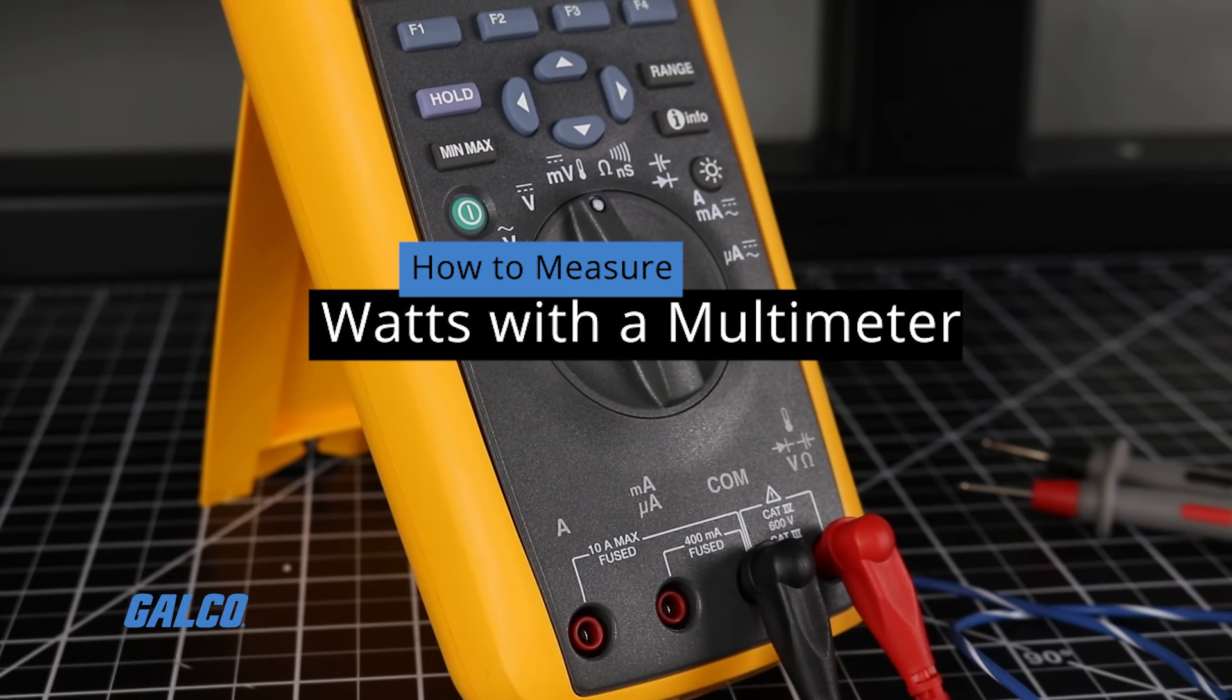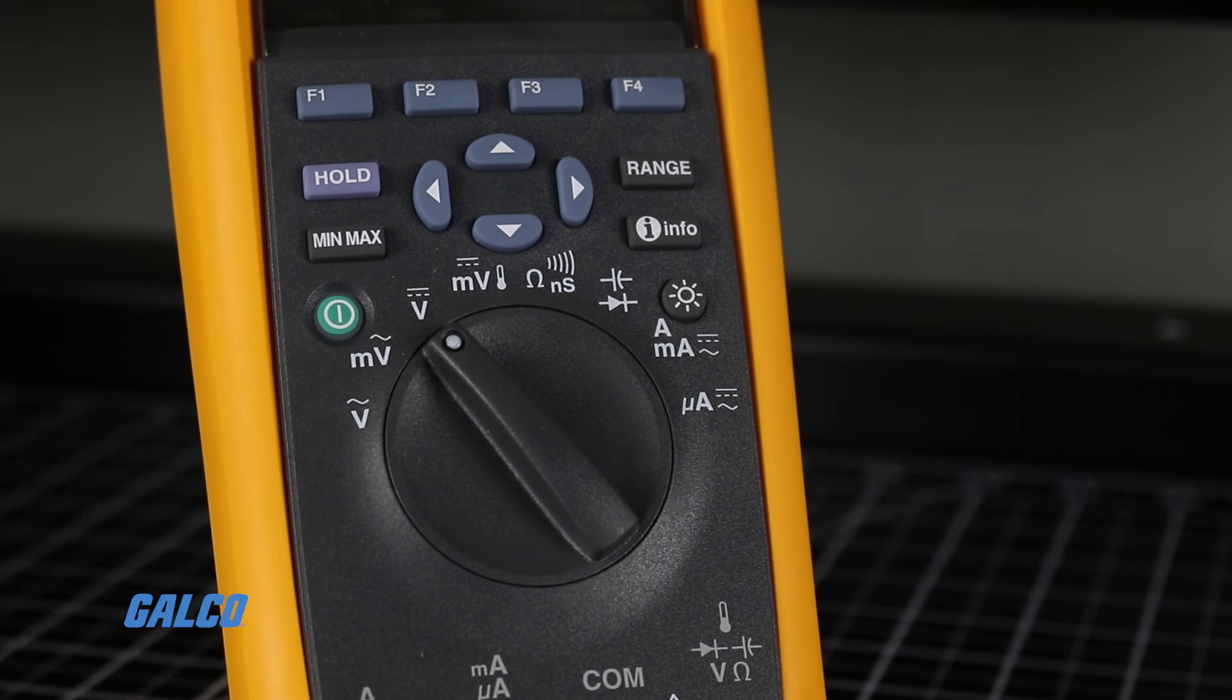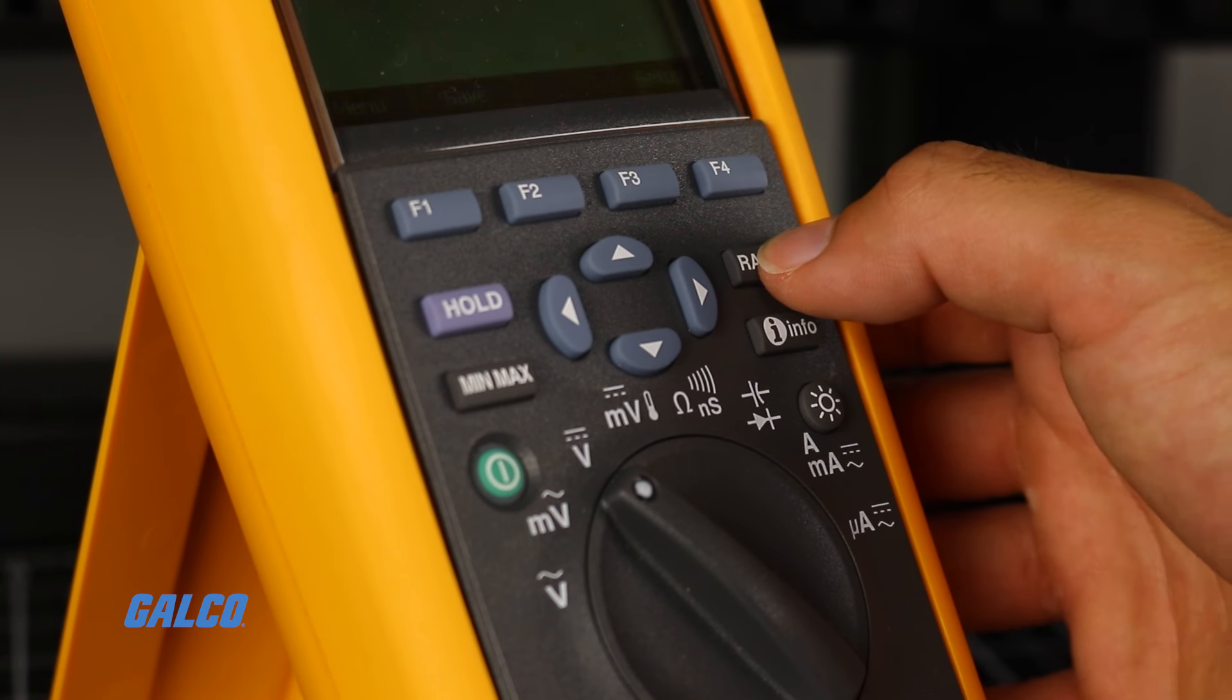To measure watts with a multimeter, begin by choosing the voltage setting on your multimeter dial. Make sure that the appropriate voltage range is selected.